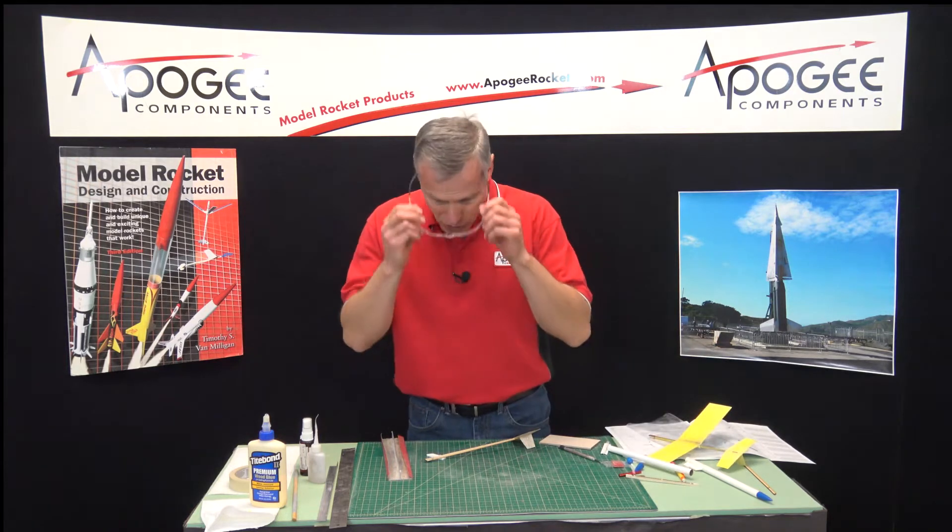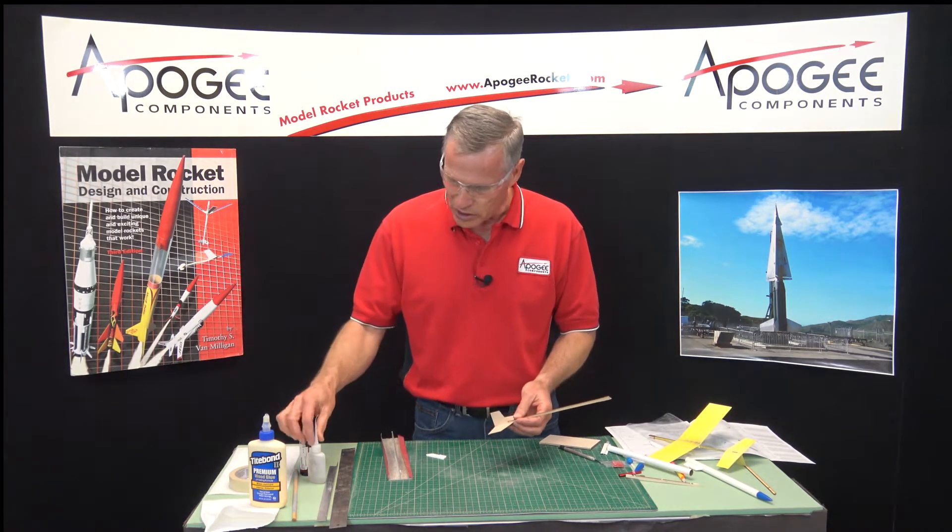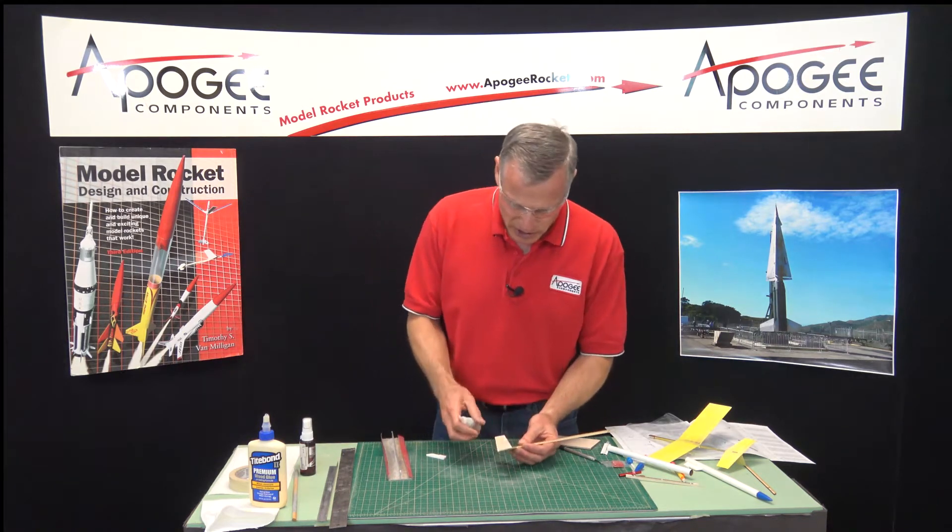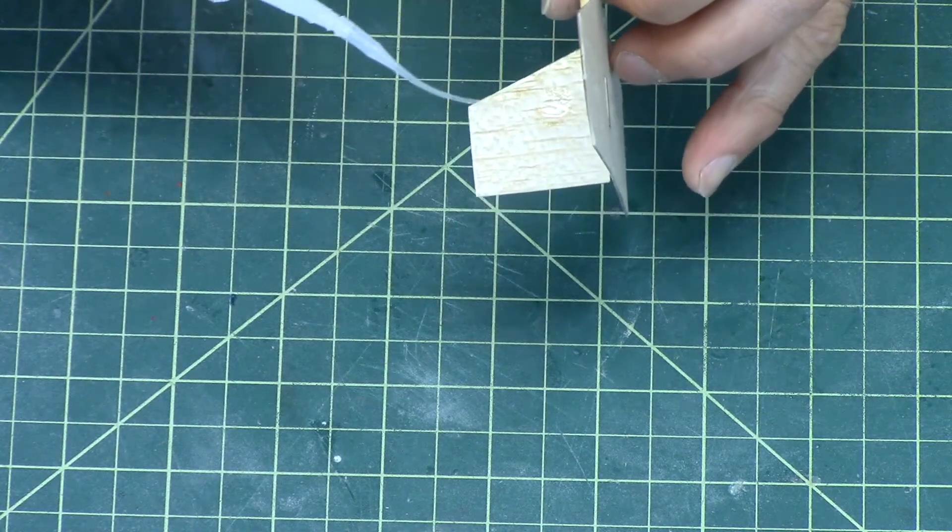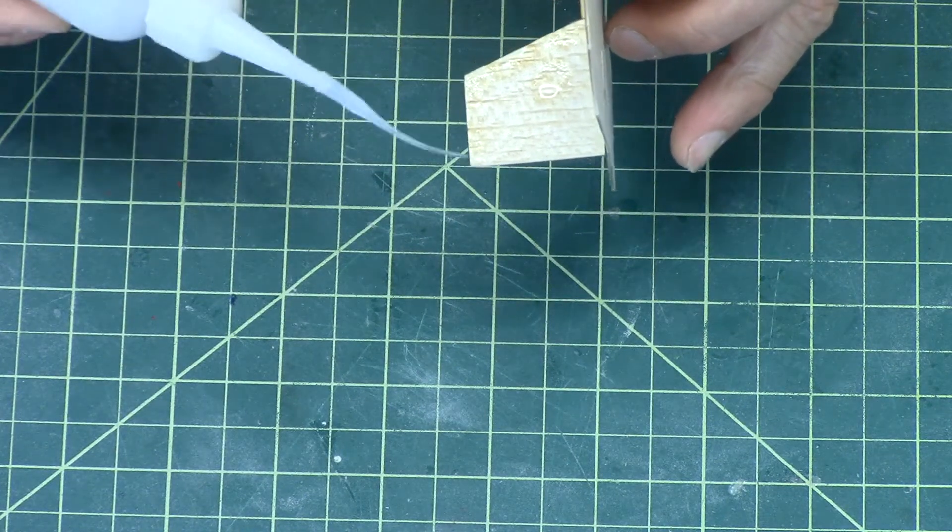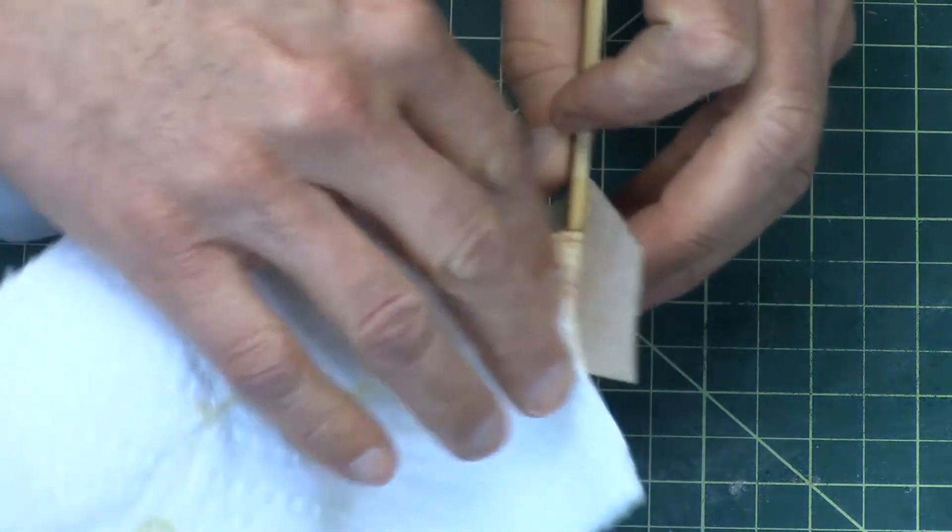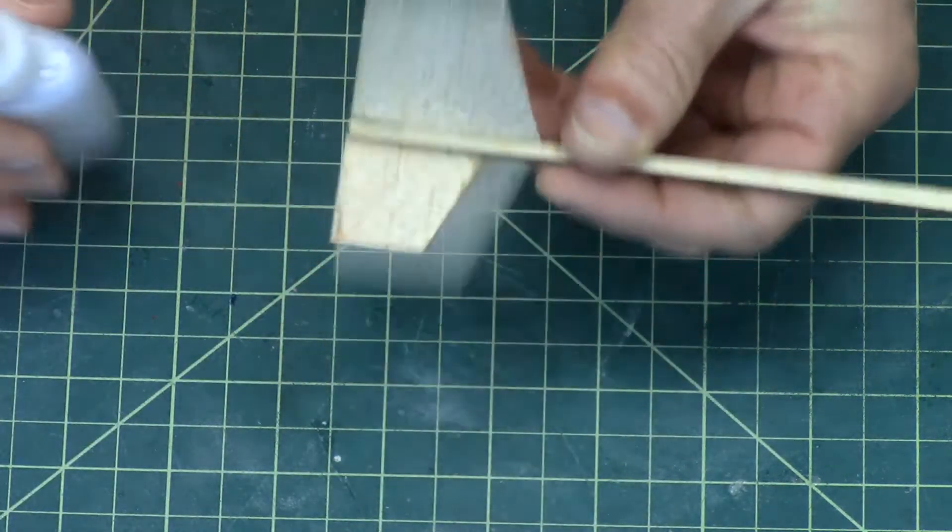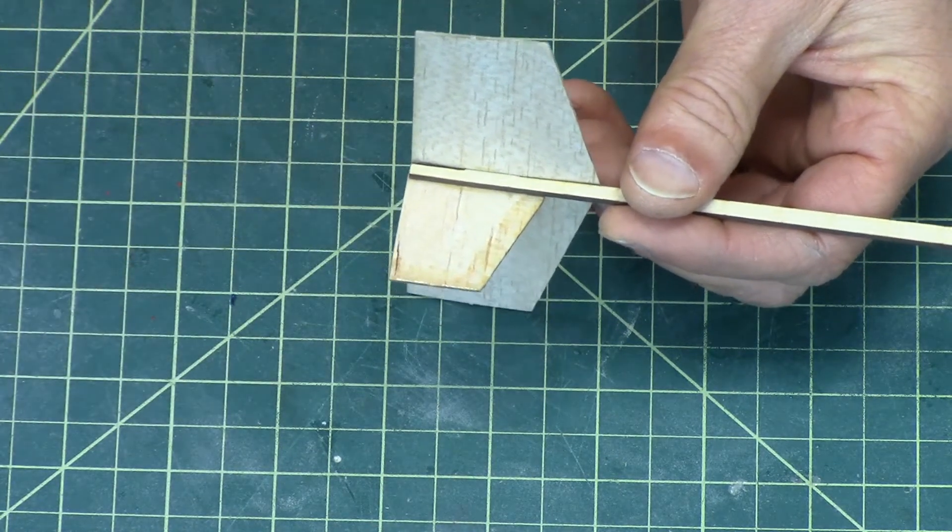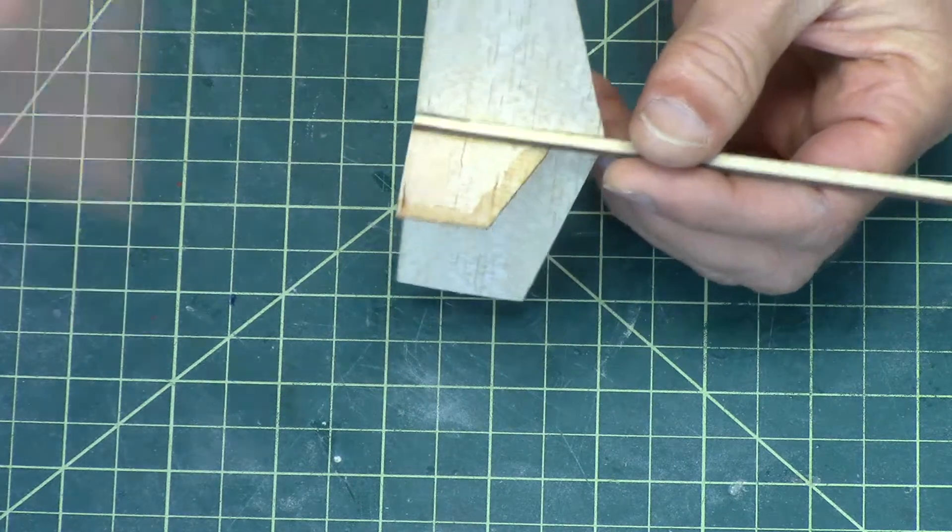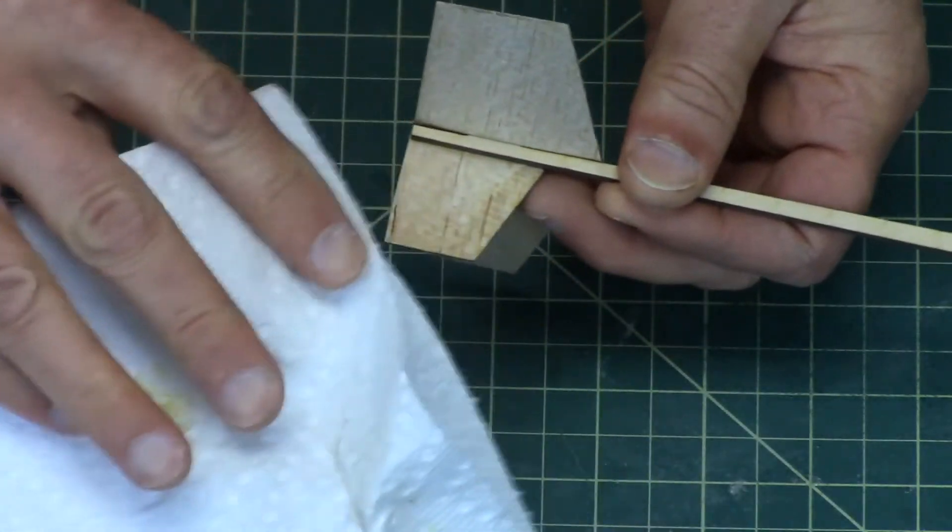I prefer to use thin super glue, but you can use thick as well. If you're using thin, make sure to wear your safety glasses. Basically, I just want to put super glue along the edges, and let that wick in, and then wipe it off, and then do the other side. You can see it's water-thin here, and it can splash and get into your eyes, so that's why you want to make sure that you're wearing safety glasses.